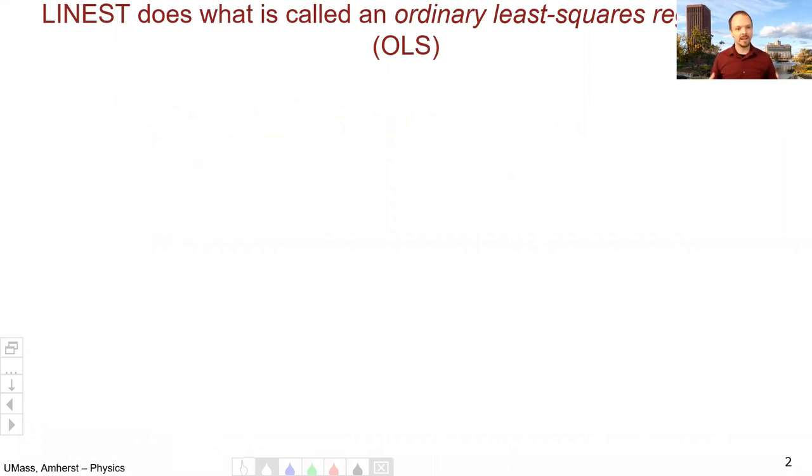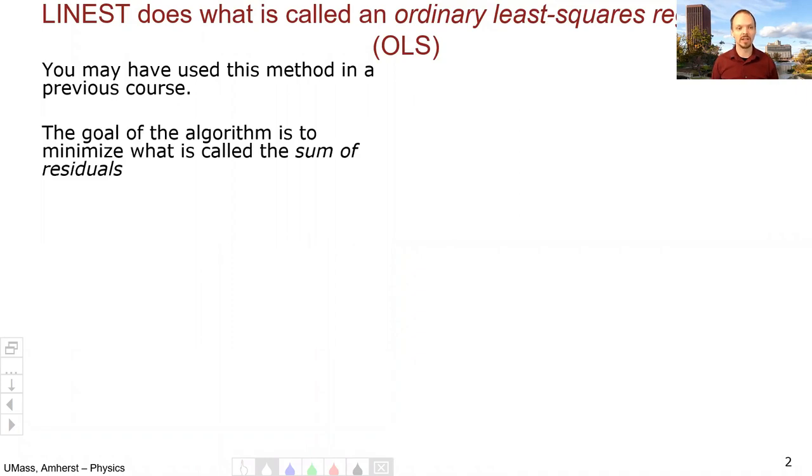Linest does what's known as an ordinary least squares regression, or abbreviated OLS, because that gets kind of long to talk about. So what is an OLS? Well, it's a method you might have used in a previous course, like in a biology lab, or if you've taken statistics, you've probably seen a basic least squares regression. And the goal of the ordinary least squares regression is to minimize what's called the sum of the residuals. So what the heck does that mean?